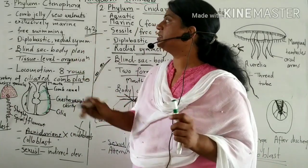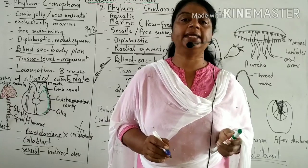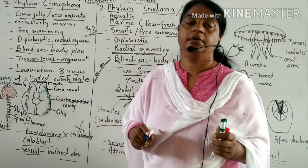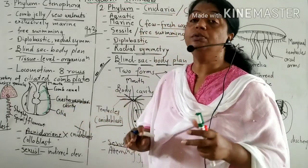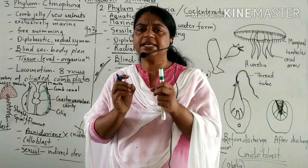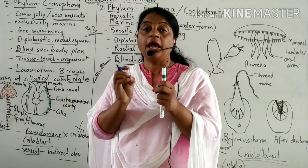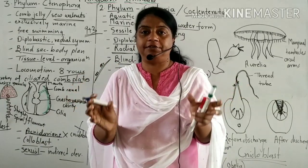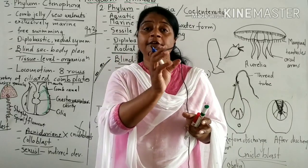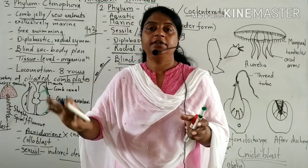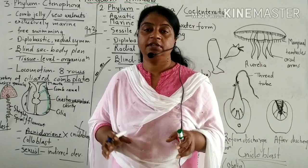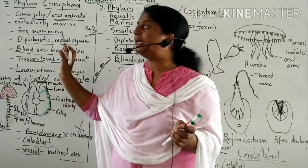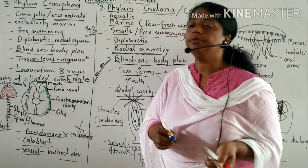An example of this phylum is Pleurobrachia. The special character of this phylum is bioluminescence — they have photo cells and emit light, brightening in the sea water. Bioluminescence is the special feature found in phylum Ctenophora.